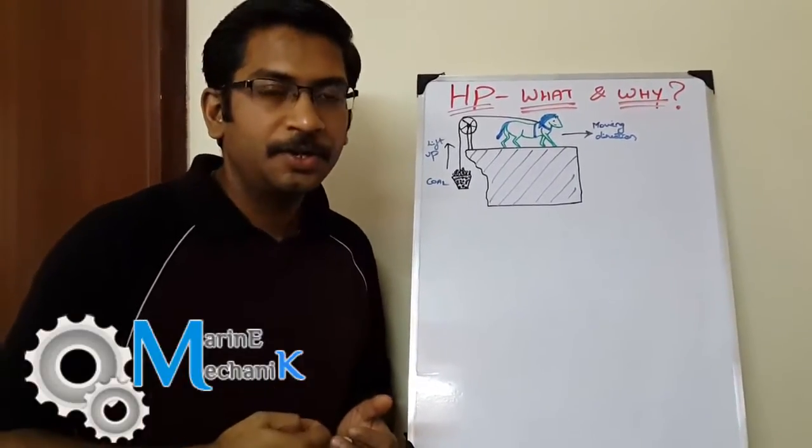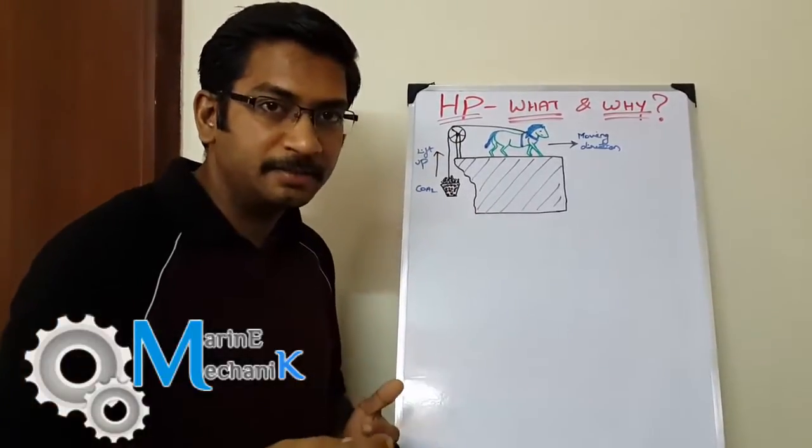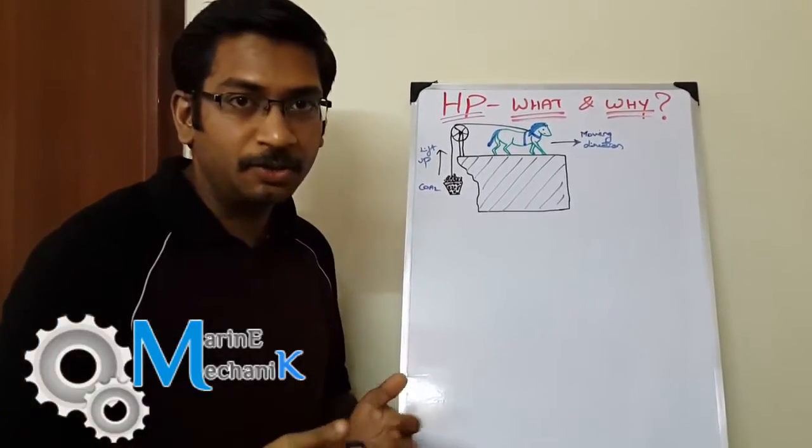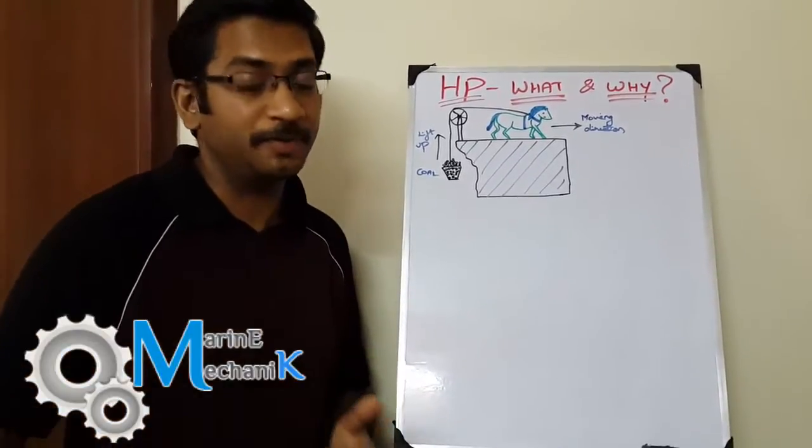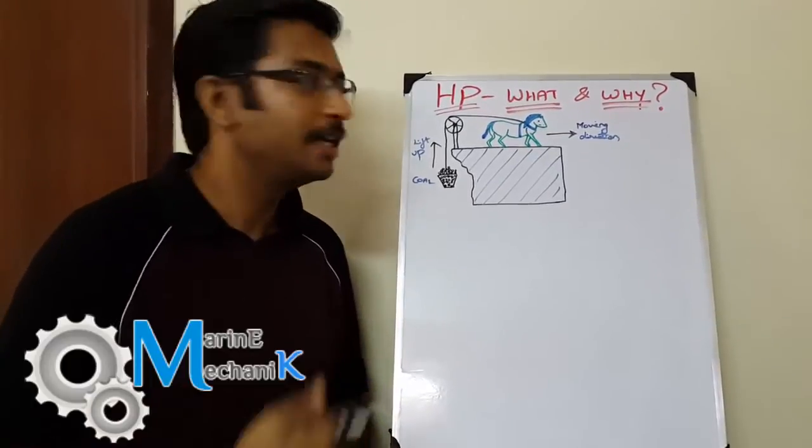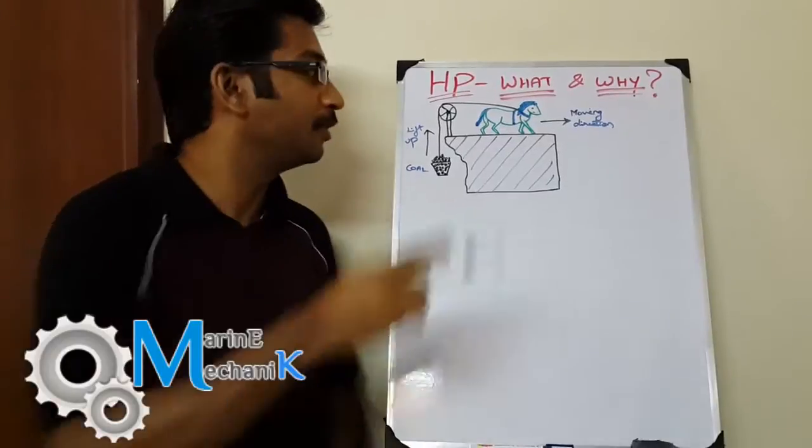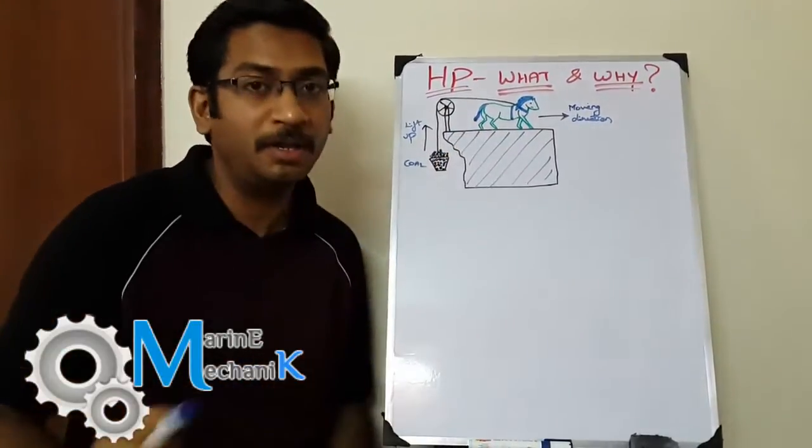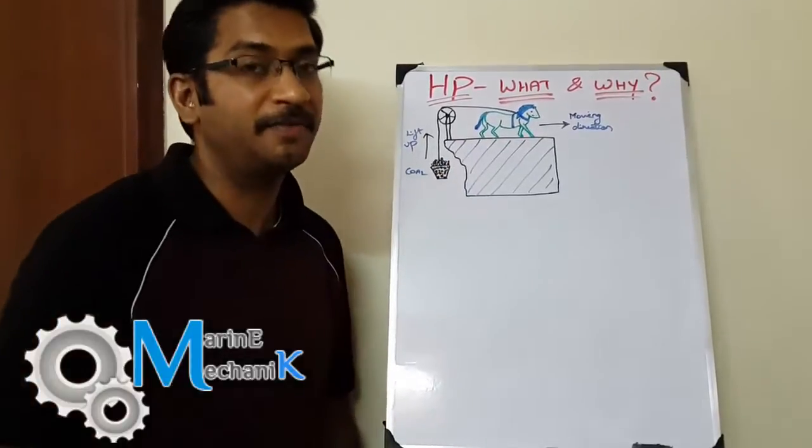They did not have elephants or other animals there. If James Watt had been in India where elephants were used to lift heavy objects, he would have named it elephant power. Since they had horses, which were the best performers out of all available animals, they named it horsepower.